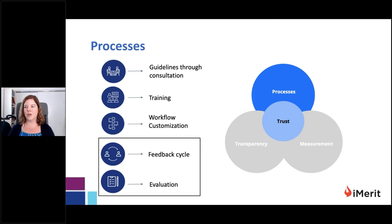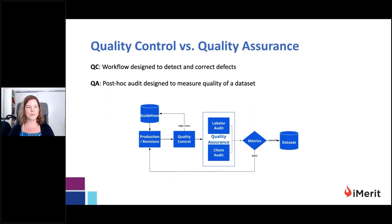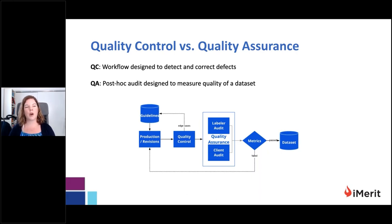The next cornerstone is processes. From a previous webinar, we discussed five steps in a pipeline for developing a successful annotation project. The latter two steps — feedback cycle and evaluation — are the processes most intimately involved in developing a rigorous quality framework. An important conceptual distinction here is between quality control and quality assurance. Quality control is a process or workflow designed to detect and then correct or remove defects, whereas quality assurance is a post-hoc audit process designed to measure the quality of a dataset, and ultimately this is where your ongoing trust will come from.